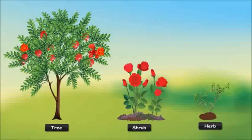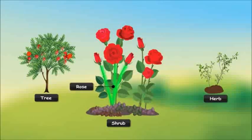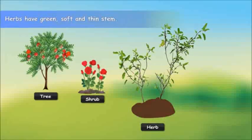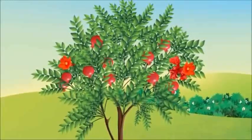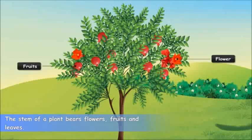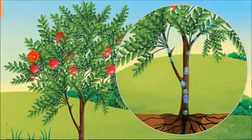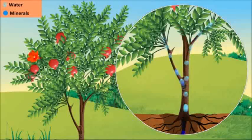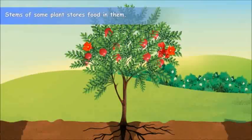Unlike trees, shrubs and herbs do not have hard and strong stems. The stem of a shrub is woody but a lot thinner than that of a tree. Some shrubs, like a rose plant, have more than one stem. Herbs have green, soft and thin stems. Apart from offering support to a plant, the stem performs a number of other functions. It is the stem on which other plant parts like flowers, fruits and leaves grow. The stem also acts like a transport system — it takes water and minerals from the roots to all other parts, and carries food from the leaves to the other parts. In addition, the stems of certain plants also store food in them, for example sugarcane. Such stems are edible.